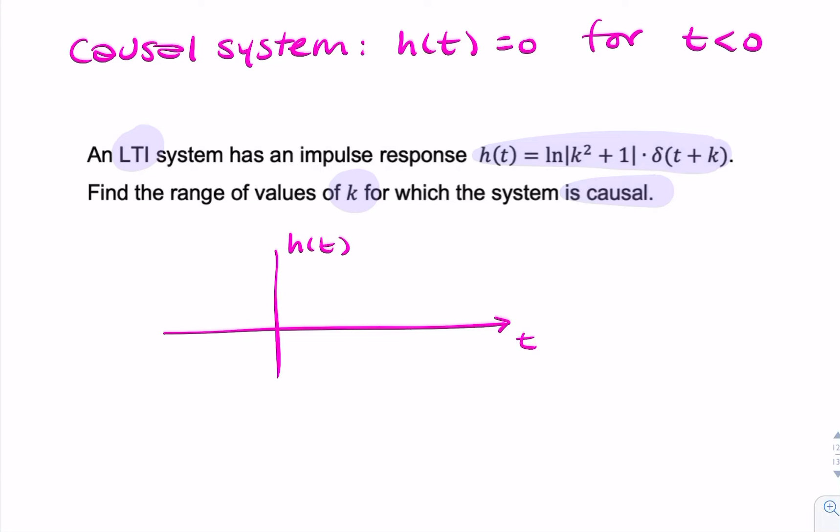When does the impulse happen? It happens when this argument equals zero, so that's when t equals minus k. So if k was positive, that would happen here. t equals minus k, and k is positive.